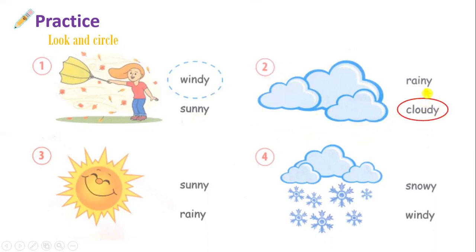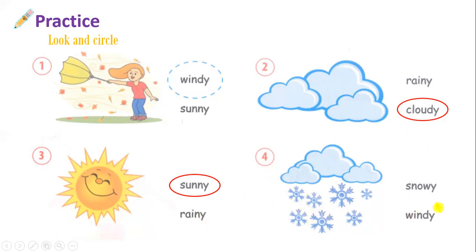Còn rainy là trời mưa. Number three — sunny or rainy. Ở đây chúng ta quan sát bức tranh số 3, chúng ta nhìn thấy trời có nắng. Tức là đáp án là sunny. Còn rainy là trời mưa.